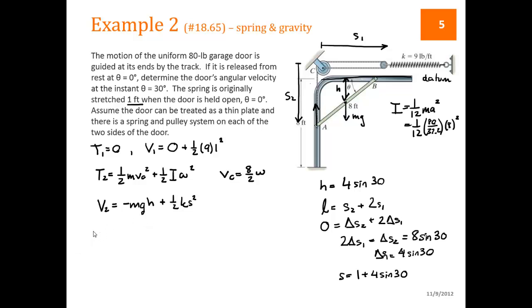So now let's plug this into our T1 plus V1 equals T2 plus V2 equation. We get 0 plus 1/2 of 9 times 1 squared is equal to 1/2 of the mass times 4 omega squared. We're looking for omega. Plus 1/2 of I times omega squared. So that's the kinetic energy. And then we have the potential energy minus w which is our 80 times h which is 4 sine of 30 plus 1/2 of 9 times this is 1 plus 2 equal to 3 squared. So I comes from this expression up here. M is 80 divided by 32.2.